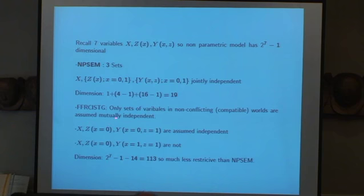My model, from my 1986 paper, only sets of variables in non-conflicting, compatible worlds are assumed mutually independent. So I say that x, z x equals 0, and y x equal 1 z equal 1 are assumed independent, because I could have a world where I did both of these. But I can't have a world where I have z x equals 0 and y x equal 1 z equal 1. I don't assume they're independent, because this is in one world, and this x is in another. And I don't assume they're independent. Judah does. That's the difference. That's the fundamental difference. Because he allows independence across worlds, he can identify a PDE. I couldn't.